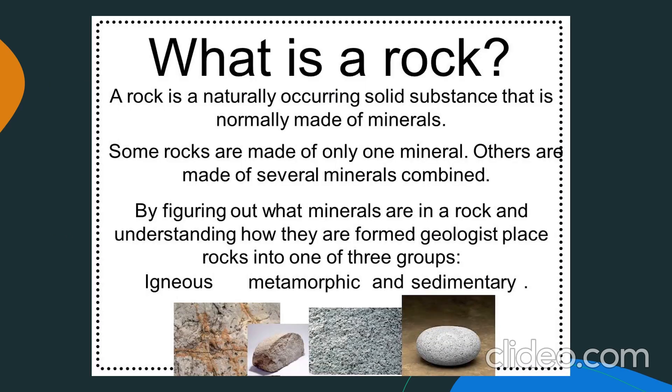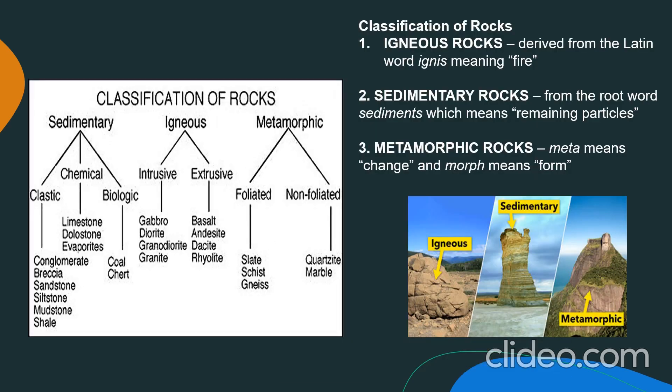Understanding about rock will enable us to figure out what minerals are in a rock. These rocks are naturally occurring solid substances that are normally made of minerals. Some of these rocks are made of only one mineral, but others consist of several minerals combined. Geologists classified rocks into three groups: sedimentary, igneous, and metamorphic.